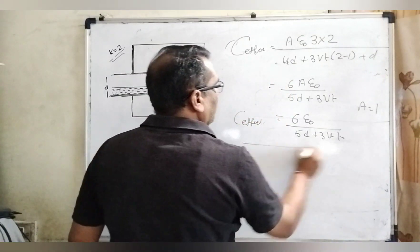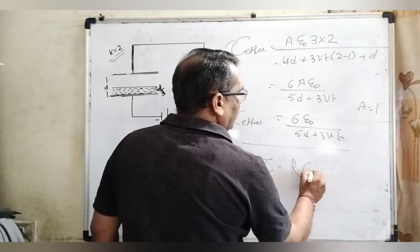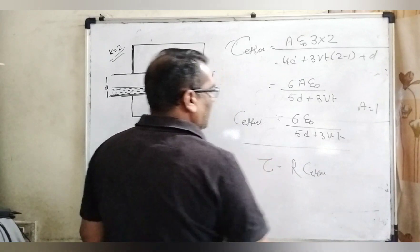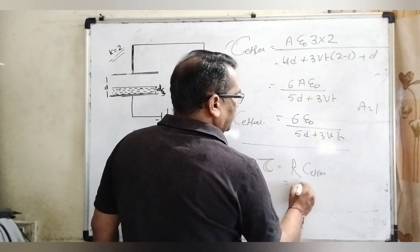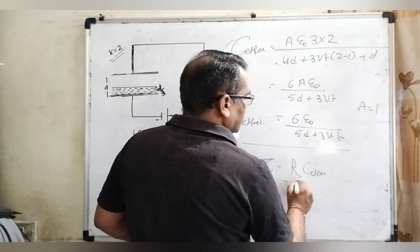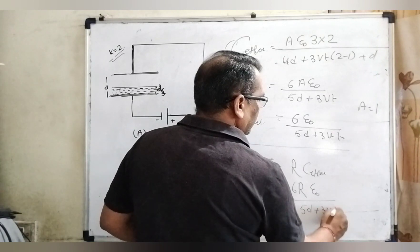But what is the formula of time constant? Time constant is R times C effective. It is the formula of time constant, it is denoted by tau. Substitute the value: R times 6 epsilon 0 over 5d plus 3Vt.